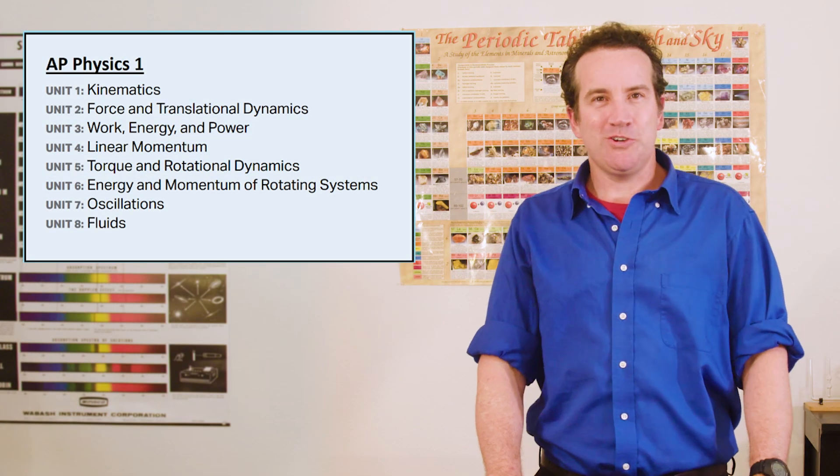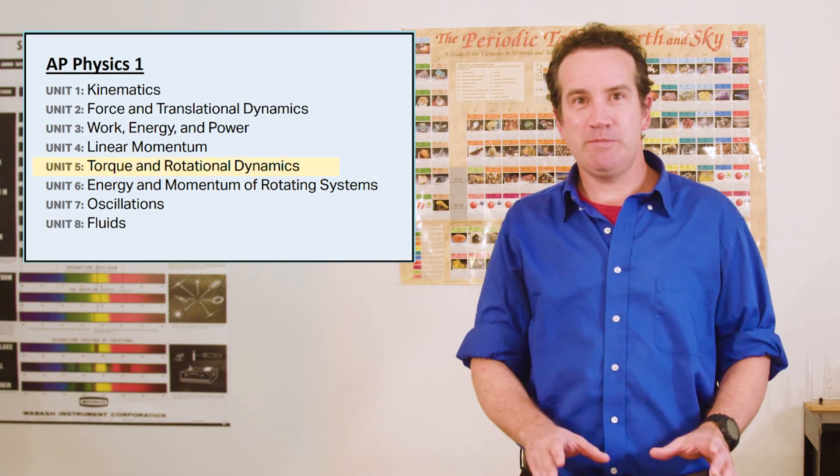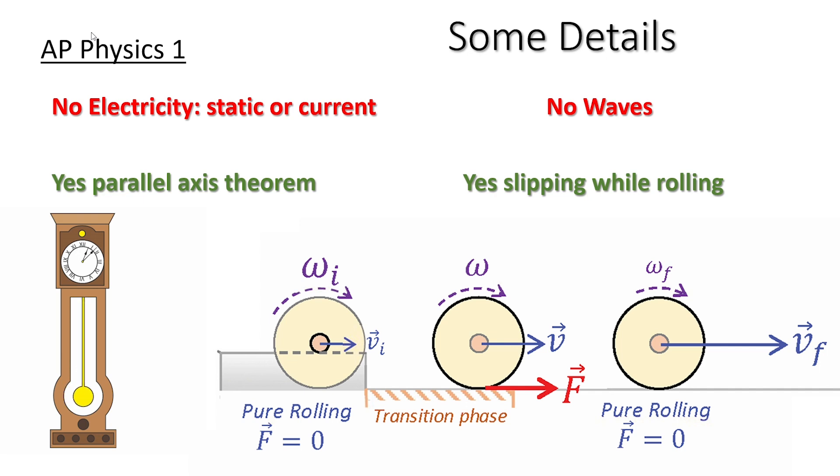AP Physics 1 is also gaining a few rotational dynamic specific topics, such as the parallel axis theorem, as well as a qualitative treatment of slipping while rotating or rolling.